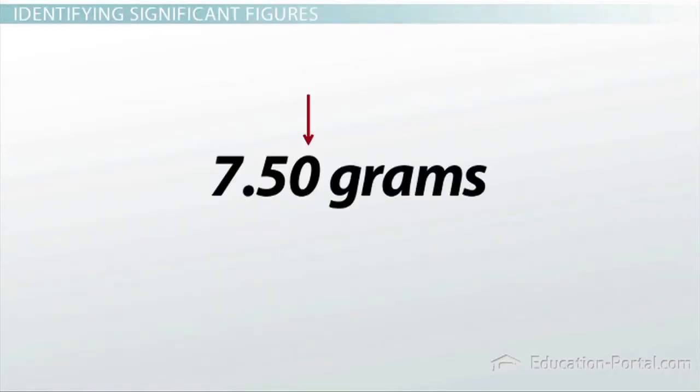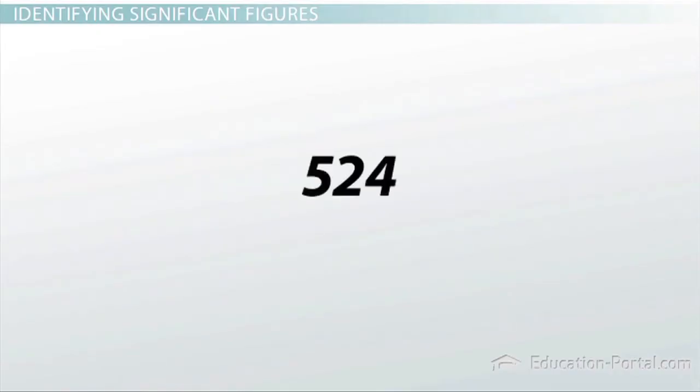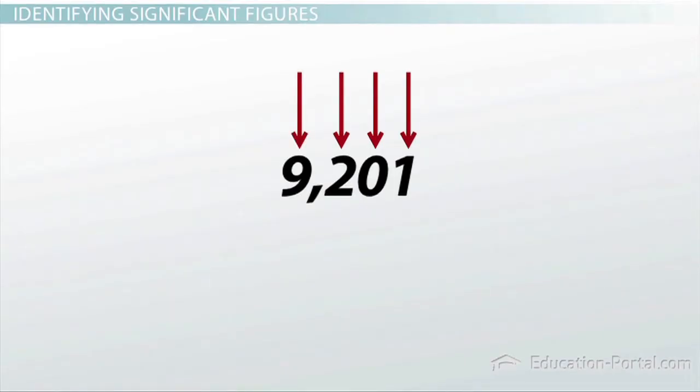If the last zero in 7.50 is significant, what numbers are not significant? First of all, all non-zero numbers are considered significant, as in the number 524, which has three significant figures. Also, zeros between two non-zero numbers, I like to call them sandwiched zeros, are significant, as in the number 9201, which has four significant figures.